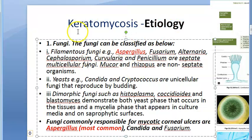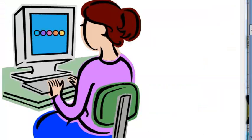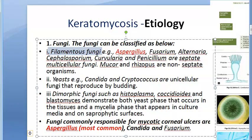The cause is fungi. The types you need to know include filamentous fungi such as Aspergillus, Fusarium, Alternaria, Cephalosporium, Curvularia, and Penicillium. Mucor and Rhizopus are non-septate organisms also coming under filamentous fungi.